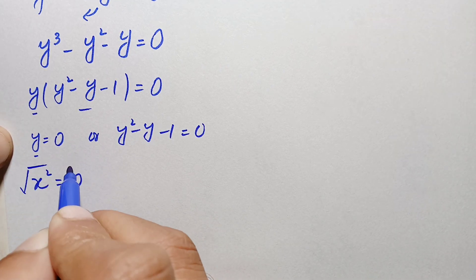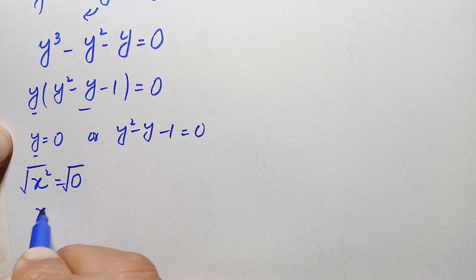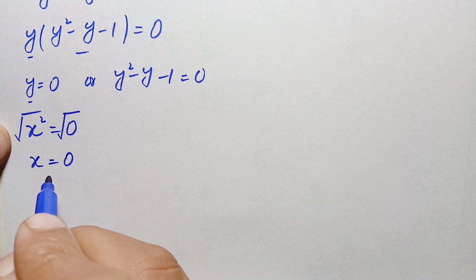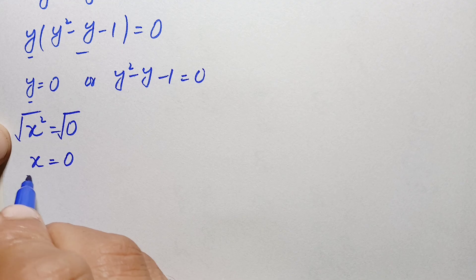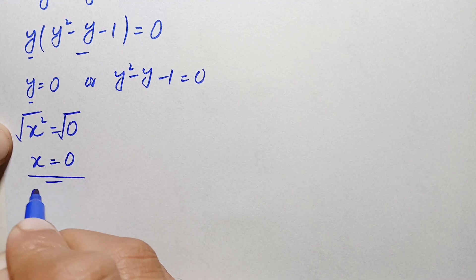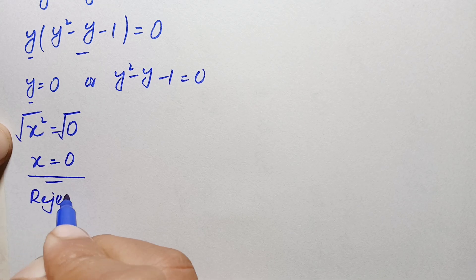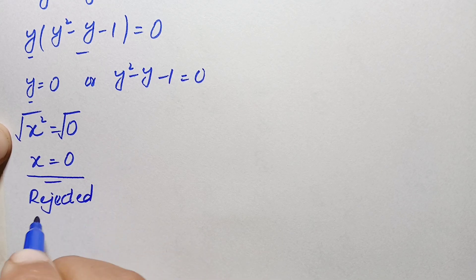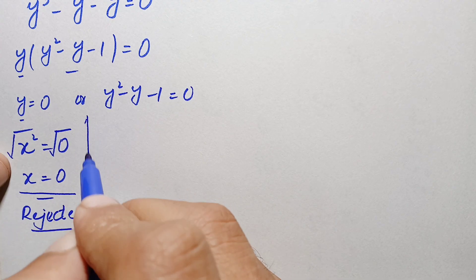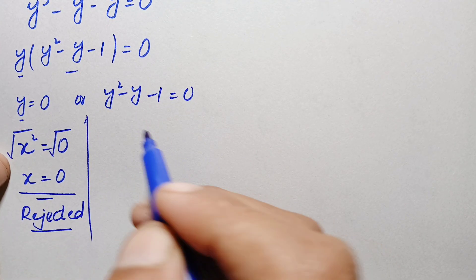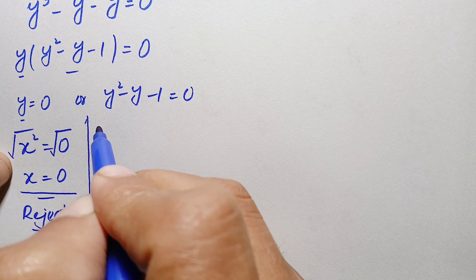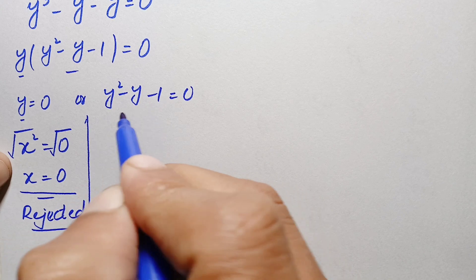Taking the square root on both sides gives x = 0. However, x = 0 is not possible because x represents the side length of a triangle, which cannot be zero. So we reject this solution. We now solve the quadratic equation y² − y − 1 = 0. We cannot factor it by standard methods, so we will use the quadratic formula.